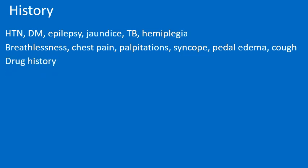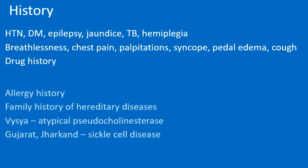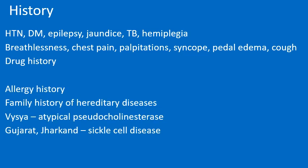In drug history, we have to ask whether the patient is taking any drugs for treatment of diabetes, hypertension, or any other condition. We should also ask for any history of hypersensitivity to drugs — that is, any history of allergy. We should ask for family history of hereditary diseases. For example, in the Vaisha community, patients may have atypical pseudocholinesterase, so when we use succinylcholine in these patients, there will be prolongation of the duration of action because of phase 2 blockade.